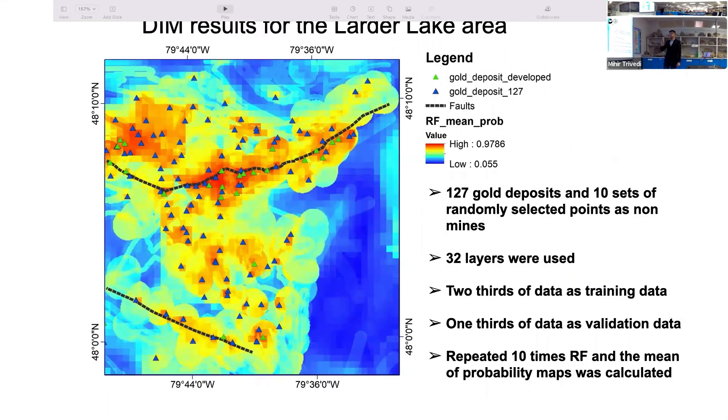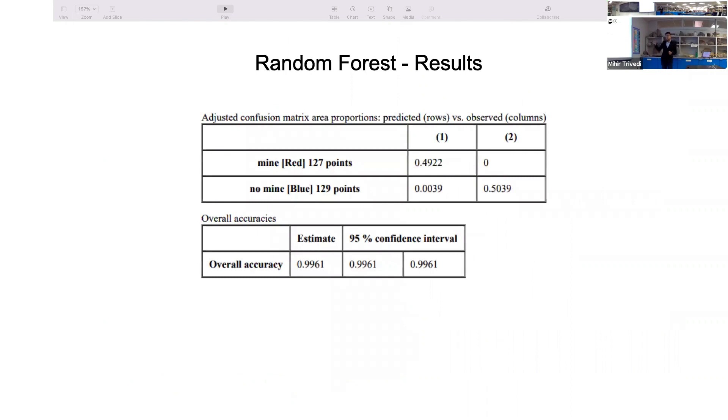This is one of the data integration model results for Ladder Lake area, where we have taken 127 gold deposits and 10 sets of randomly selected points. Wherever you see red, it shows higher prospectivity for gold. Wherever you see blue, it shows lower prospectivity or no gold. When we implemented random forest with the help of EnMAP-Box, we got more than 95% accuracy with all the known gold deposits.